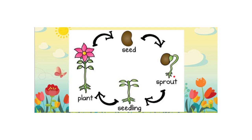After that, it grows and becomes a seedling. Look how beautiful it is. When the seedling grows, it becomes a plant. Look how beautiful the plant is — it has a pink flower. This is the life cycle of a plant.